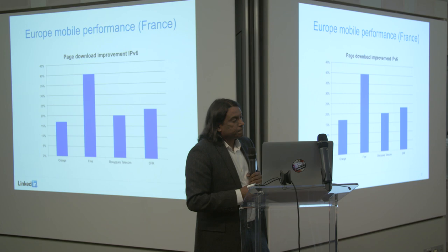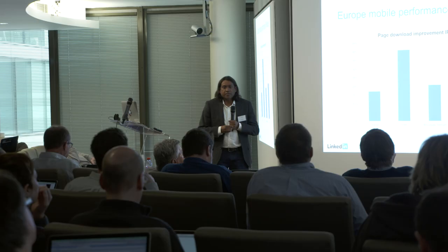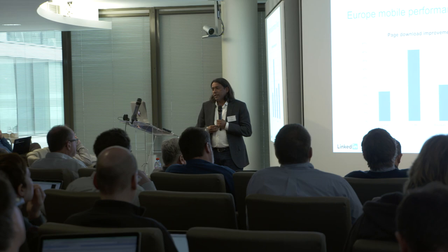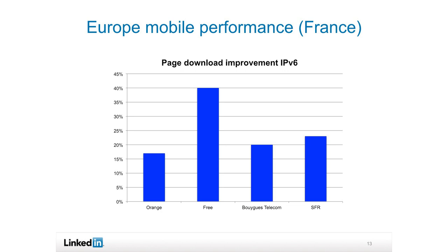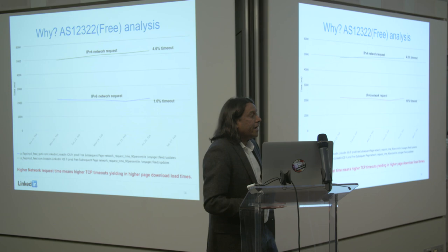So mobile performance is what I've been looking at recently. I decided to do some numbers here for France, and I was very surprised looking at all these numbers while preparing this deck. We see that Orange is at about 15% and Free is at about 40% better page download time over v6 than v4. We've seen this across the board. So let's dig a little deeper — why is this happening?